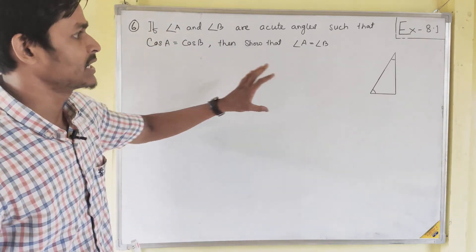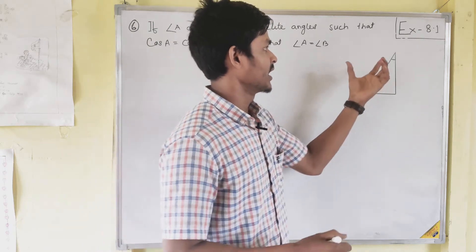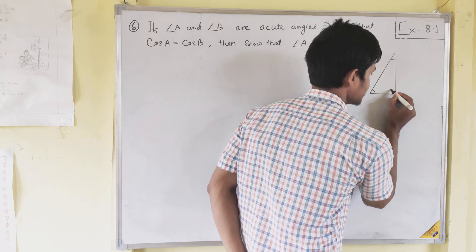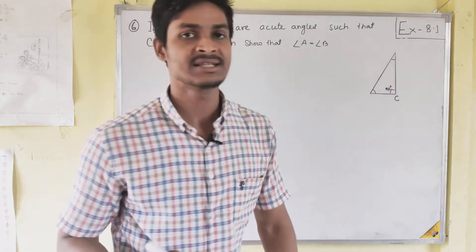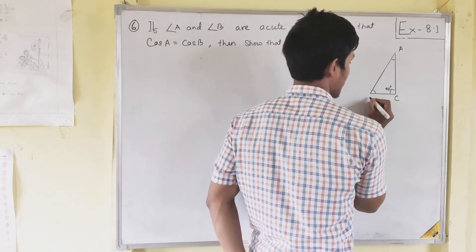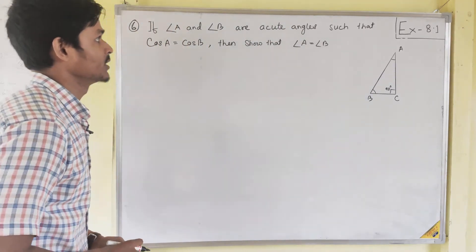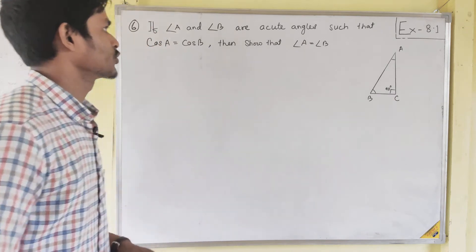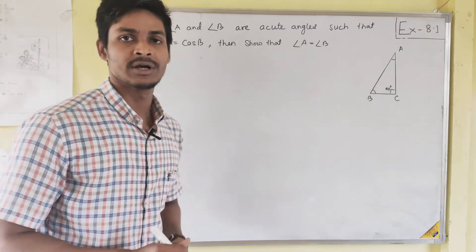So here I draw a figure where angle A and angle B are acute. That means angle C is 90 degrees. So these two angles are acute angles, and given cos A equals cos B, you need to show that angle A equals angle B.